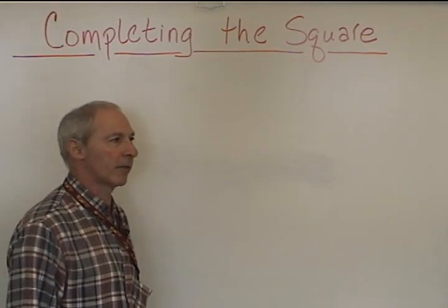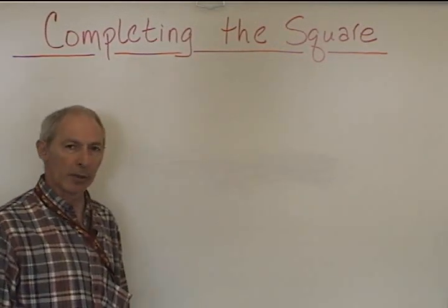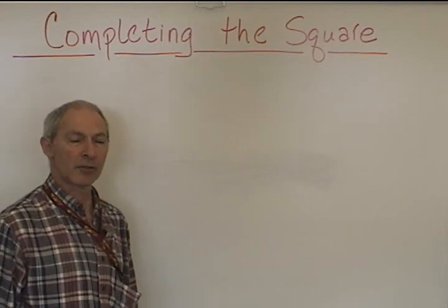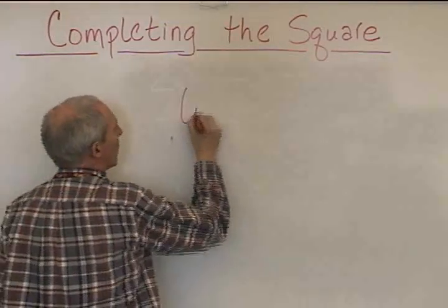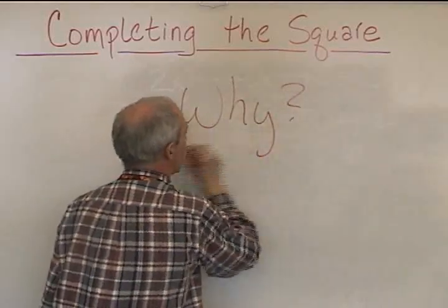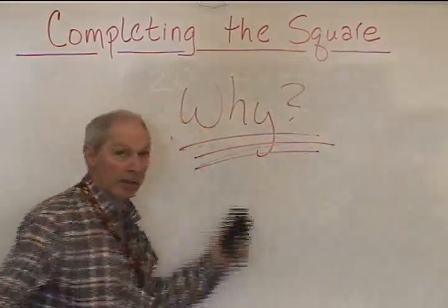Completing the square is the process of developing a perfect square trinomial so that you can solve a quadratic equation. Now the question is, why are we doing this in the first place? Just why are we doing this?